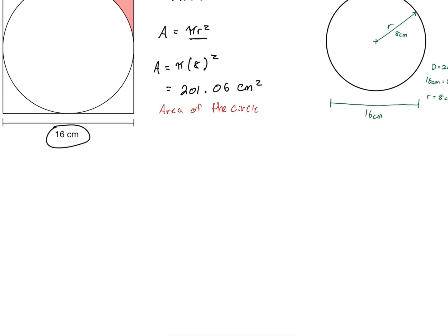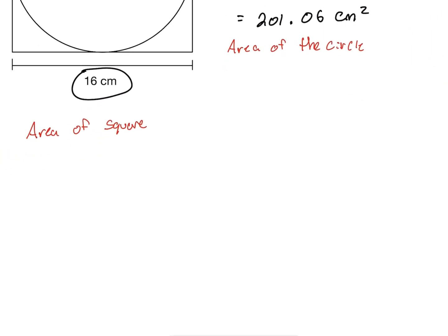Now let's find the area of the square around the outside. The area of a square is A equals base times height. The base is 16 centimeters and the height is also 16 centimeters since this is a square, and this comes out to 256 centimeters squared.